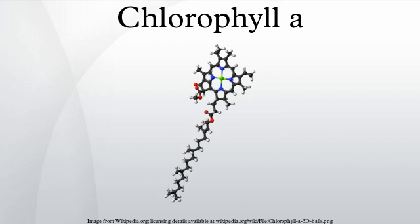This photosynthetic pigment is essential for photosynthesis in eukaryotes, cyanobacteria, and prochlorophytes because of its role as primary electron donor in the electron transport chain. Chlorophyll A also transfers resonance energy in the antenna complex, ending in the reaction center where specific chlorophylls P680 and P700 are located.